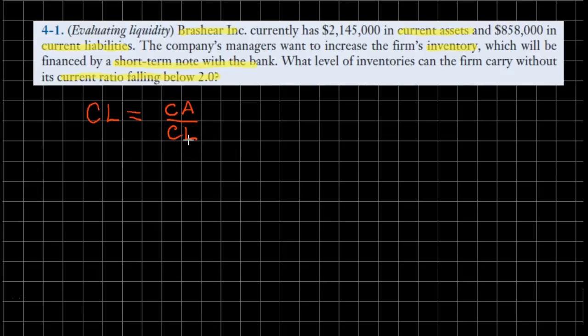A bank loan will definitely change this ratio, but first let's figure out the new current assets after inventory has been increased. The new current assets is equal to previous current assets of $2,145,000 plus an addition of X. Let's call the amount borrowed from the bank as X dollars, and we use all that money to increase the inventory.